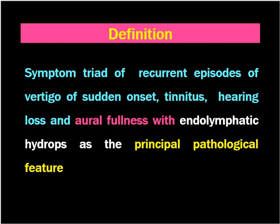Meniere's disease is defined as a symptom triad of recurrent episodes of vertigo of sudden onset, tinnitus, hearing loss, and aural fullness, with endolymphatic hydrops as the principal pathological feature.